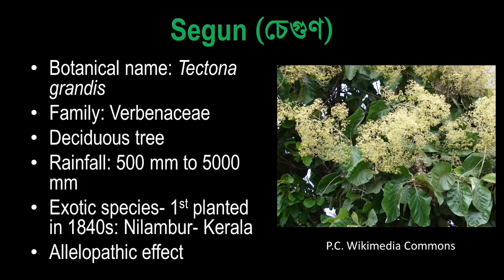It is an exotic species, but it is a very important plant that is economically an important species. The scientific name is Tectona grandis, family Verbenaceae, and it is a deciduous tree. It has a very varied climate tolerance, like 500 to 5,000 mm. The second plantation was taken in 1840. It has an allelopathic effect on the site, and it has an allelopathic effect on eucalyptus.